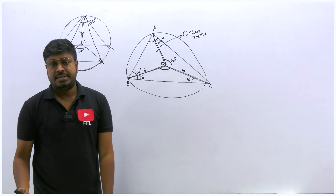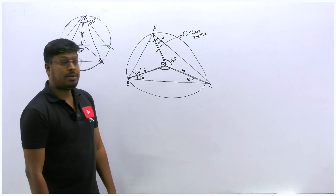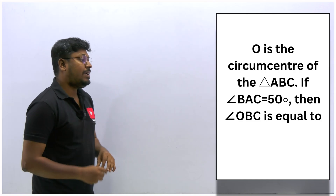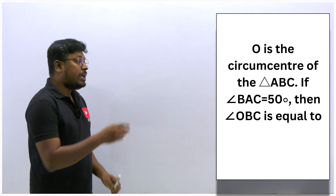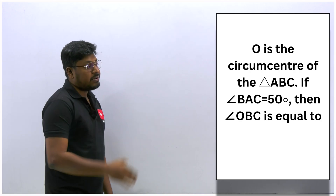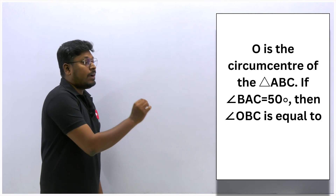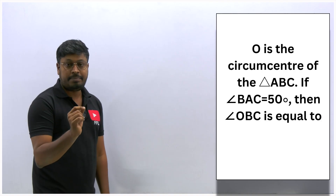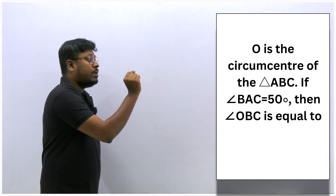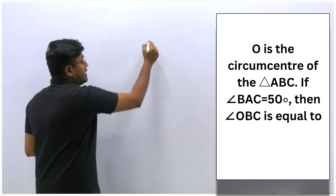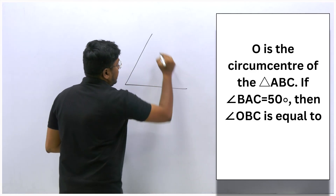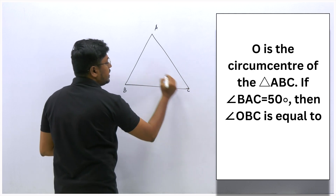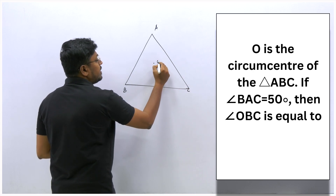Let's solve some questions. Question 1: O is the circumcenter of triangle ABC. If angle BAC = 50°, find angle OBC. Draw triangle A, B, C with circumcenter O inside it.